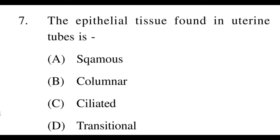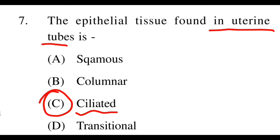Next question: The epithelial tissue found in uterine tubes — what is it called? Options: A: squamous, B: columnar, C: ciliated, D: transitional. The right option is C, ciliated. All hollow tubes have ciliated epithelial tissue lining them, such as the food pipe, uterine tubes, and fallopian tubes. This is because peristaltic movement is performed by ciliated epithelial tissue.